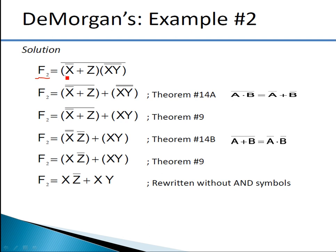The given expression is f2 = [(x̄ + z) · (xy)̄]̄. Apply De Morgan's theorem — consider (x̄ + z) as single variable 'a' and (xy)̄ as variable 'b'. So (a · b)̄ — De Morgan's first theorem gives ā + b̄. Break the line, change the sign: (x̄ + z)̄ plus (xy)̄ with one more bar, and the dot operation becomes plus.